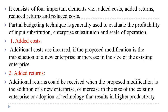Partial budgeting will also be covered in your practical session, but here you need to know the theory. It consists of four important elements: added cost, added returns, reduced returns, and reduced cost. The partial budget technique is generally used to evaluate the profitability of input substitution, enterprise substitution, and scale of operation.